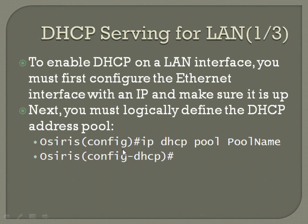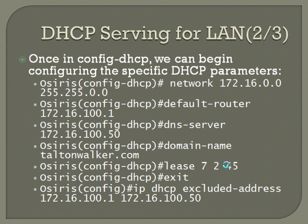Once you get there you can begin configuring the actual parameters for DHCP. The first thing you're going to want to do is define the network that you want the IPs to be vended from. In this case it's the same network assigned to the LAN interface, but it's the full network IP, not just the IP of the interface itself. So: 'network 172.16.0.0 255.255.0.0'.